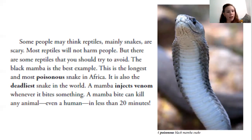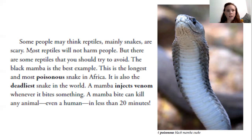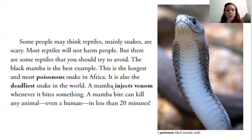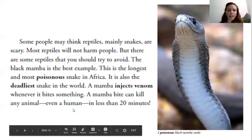Pause if you need to catch up. We had seven new words that we can look for as we read today. We know the meaning now, so we're more familiar as we read. Some people may think reptiles, mainly snakes, are scary. Most reptiles will not harm people, but there are some reptiles that you should try to avoid. The black mamba is the best example. This is the longest and most poisonous snake in Africa. It is also the deadliest snake in the world. A mamba injects venom whenever it bites something. A mamba bite can kill any animal, even a human, in less than 20 minutes. Here's a photograph — the caption tells us that it is a poisonous black mamba snake. So if you are ever on the continent of Africa, you need to make sure to avoid those snakes.